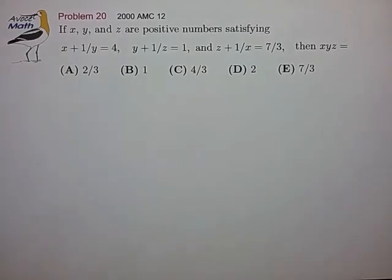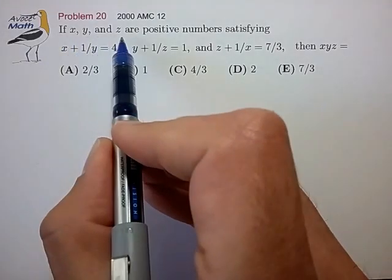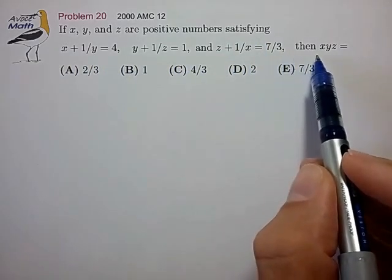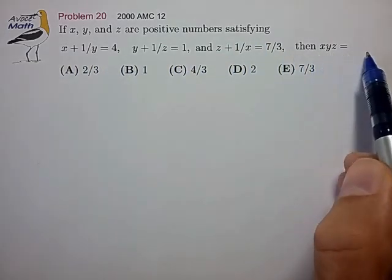Hi, this is an example problem for the two types of algebraic symmetries common in the AMC. So let's take a look at what we have. If x, y, and z are positive numbers satisfying the three equations shown, then the term x times y times z is equal to what?